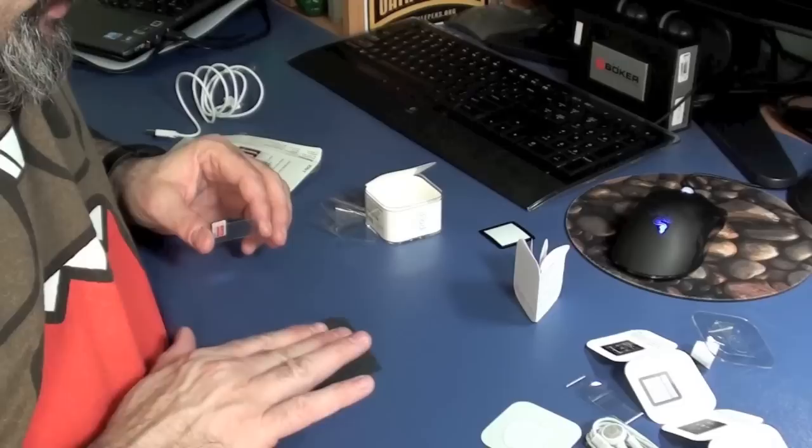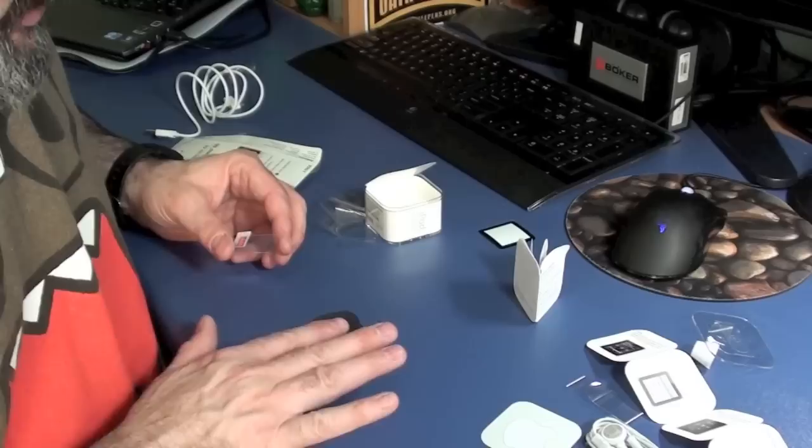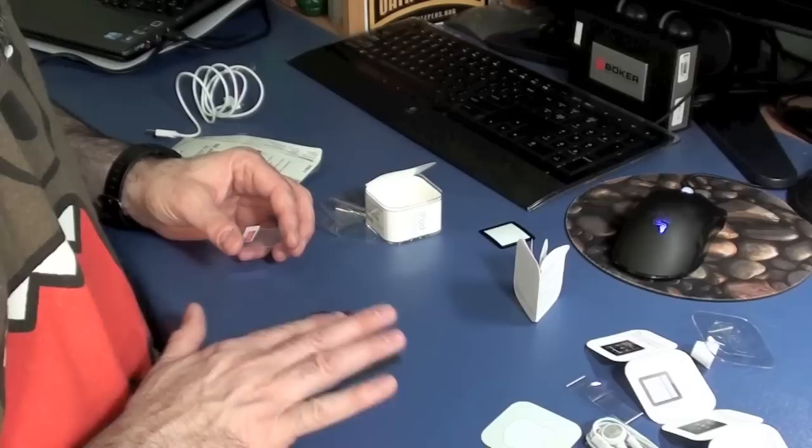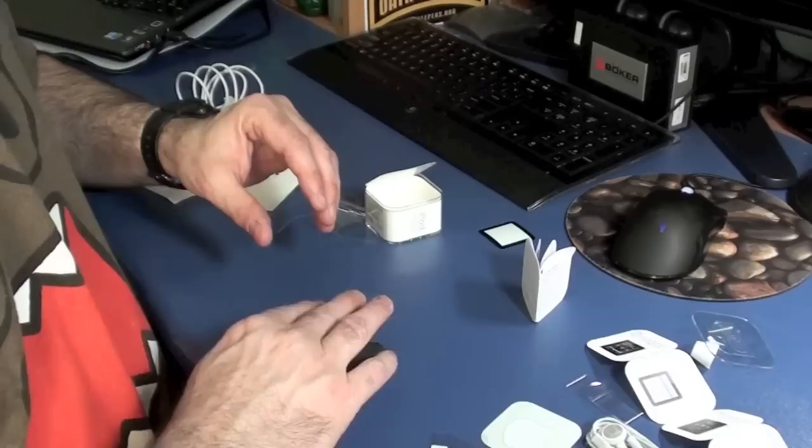And you get these plastic things that you peel off the back, and then you stick it on. And I never have too much success with this, and against my better judgment, I'm going to videotape it and try to do it in front of the camera. So, what you want to do is you want to get all the dust off this thing, and you want to peel the back off, and try not to touch the plastic, which I always end up doing.